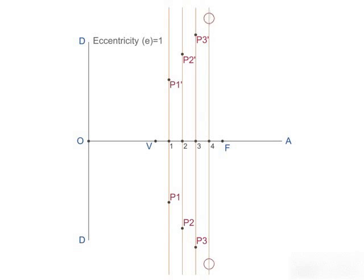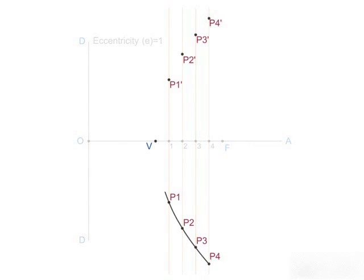To obtain the required parabola, we will draw a smooth curve passing through all these located points and the vertex V.